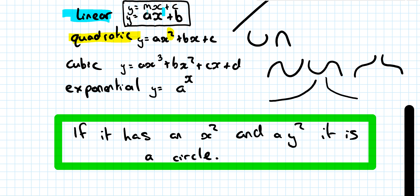There's no 1 written in because we're just lazy in maths and don't write it. With a cubic, we know it's y = ax³ + bx² + cx + d. And with exponentials, the power is the variable or unknown — we call this the base, and the power is the unknown part.